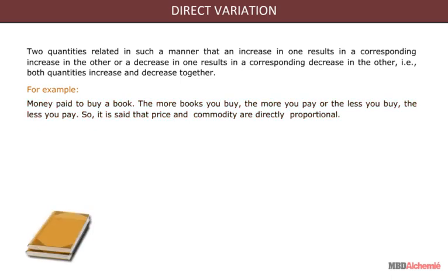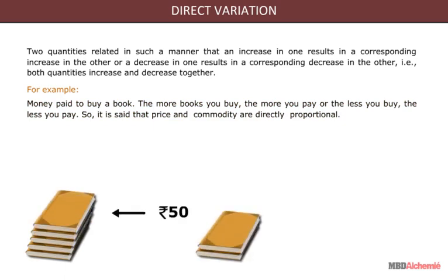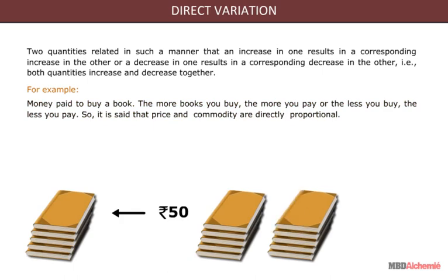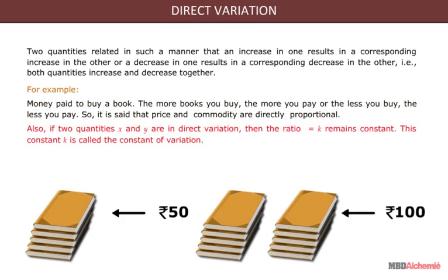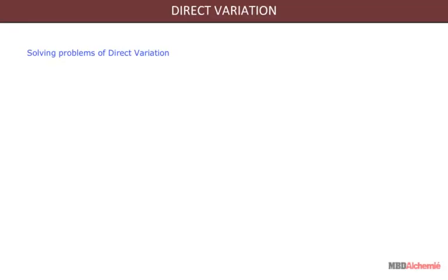In the animation, we can see that if you buy 5 books for 50 rupees, then you have to pay double for 10 books. Also, if two quantities X and Y are in direct variation, then the ratio K remains constant. This constant K is called the constant of variation. Then X upon Y is equal to K, which is a constant — that is, X is equal to KY.